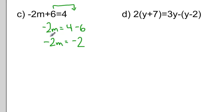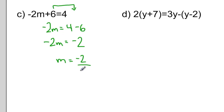Which I can simplify to make negative 2. And now I want to isolate the variable m by moving that negative 2 times m to the other side of the equal sign. When I do that, it becomes division. And my solution would be m equals 1.